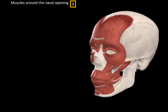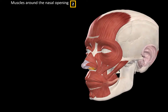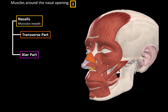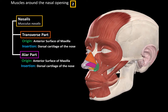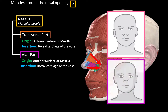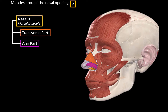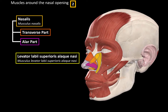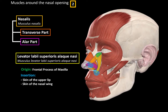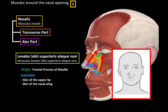Then we have the muscles around the nasal opening. The first is the nasalis muscle, consisting of two parts: the transverse part, also called the compressor naris, and the alar part, also called the dilator naris. Both originate from the anterior surface of the maxilla and insert at the dorsal cartilage of the nose — the alar part slightly more anteriorly. The transverse part constricts the nostrils and the alar part dilates them. The other muscle is the levator labii superioris alaeque nasi, originating from the frontal process of the maxilla and inserting at the skin of the upper lip and nasal wing. When it contracts, it dilates the nostrils, elevates the upper lip, and produces an expression of discontent.